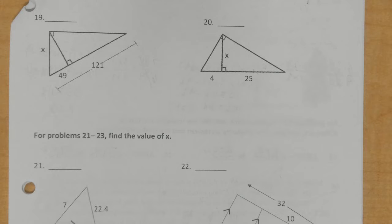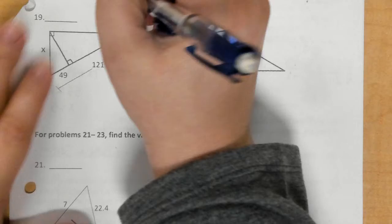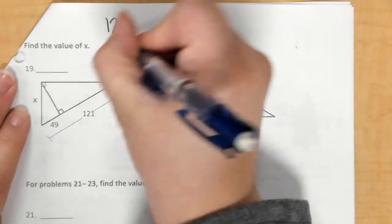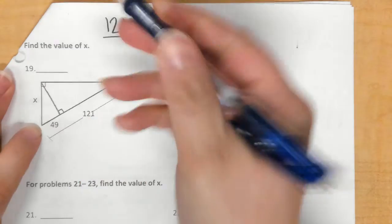Okay, for number 19, this is a geometric mean problem. Both 19 and 20 are. In 19, you are comparing the big triangle and the small triangle, and so you would do the big triangle hypotenuse, so 121, over the leg of the big triangle.